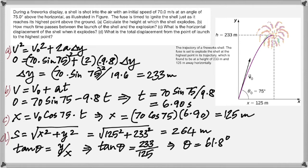Would the angle be smaller than the launch angle? Yes — because the projectile is curving this way, when you draw the hypotenuse, that angle is going to be smaller than the launch angle, of course.